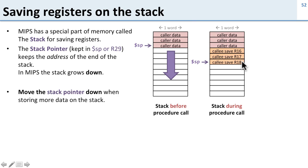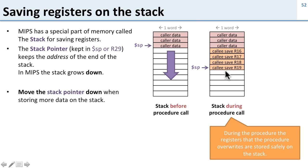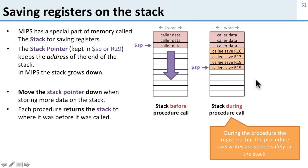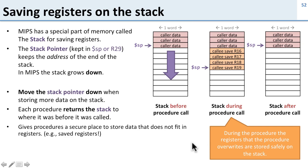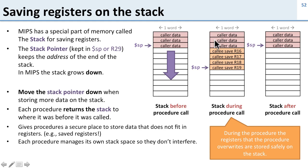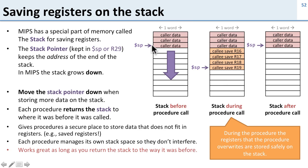When the procedure is done, it can restore those registers by reading the values off the stack, and finally move the stack back to where it was before. During the procedure, we keep all of this safe in memory, and after the procedure, we return the stack to the way it was before we were called. So the stack gives procedures a safe place to store data that doesn't fit in registers, and each procedure manages its own stack space — they don't interfere with each other.